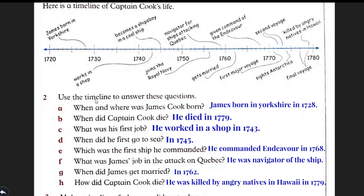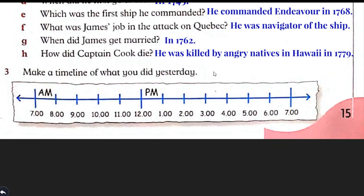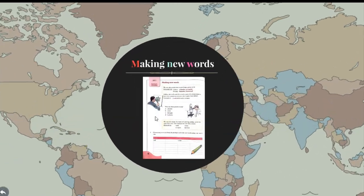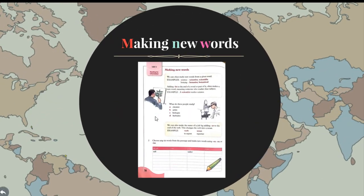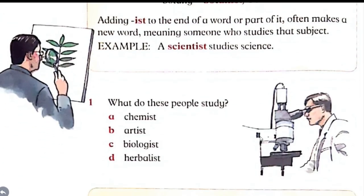The answers to these questions are here in the timeline. Question number three: make a timeline of what you did yesterday. Complete this question by yourself according to the time. Let's see the next topic, and that is making new words. We can often make new words from a given word. For example, 'science' — by adding '-ist' it will become 'scientist', or 'scientific'.